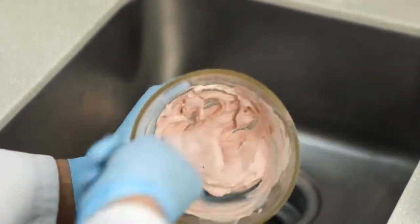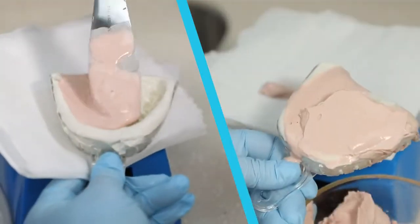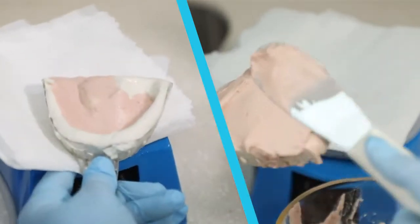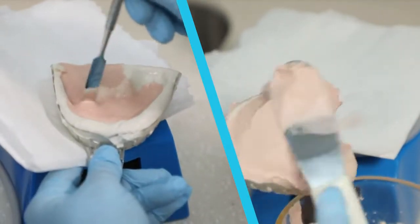Pour impression with fast-set plaster or dental stone. Pour alginate shortly after making impression to ensure accuracy.